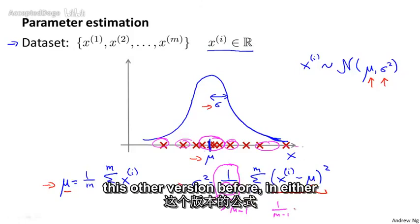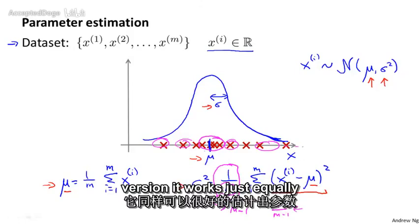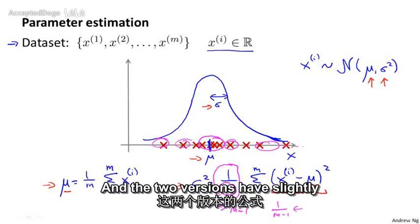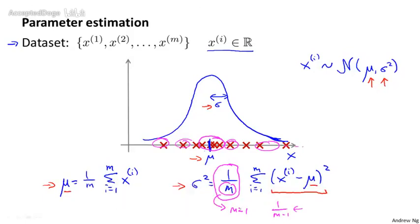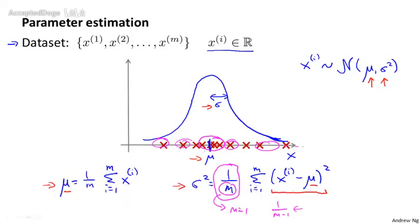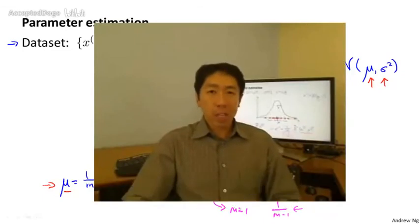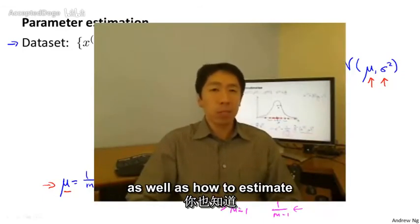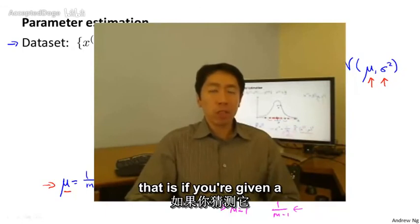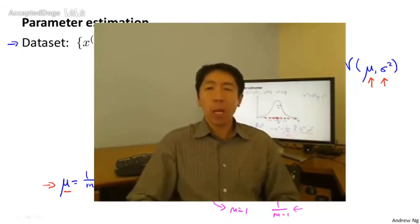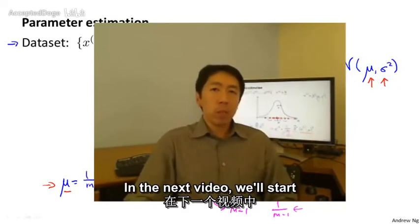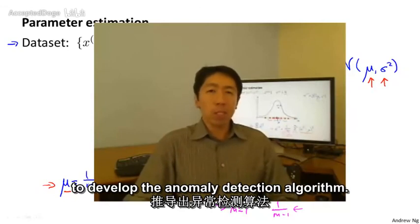Either version works just about equally well, but in machine learning most people use 1 over m. The two versions have slightly different theoretical properties, but in practice it makes very little difference. Hopefully you now have a good sense of what the Gaussian distribution looks like, as well as how to estimate the parameters mu and sigma squared given a training set. In the next video, we'll take this and apply it to develop an anomaly detection algorithm.